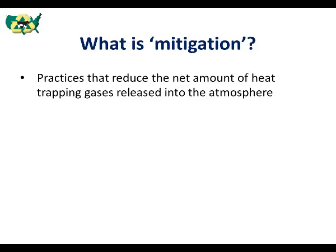Let's start out by defining what we mean by mitigation in the context of this lesson. Mitigation is defined as any practice that reduces the amount of heat trapping gases called greenhouse gases from being released into the atmosphere. Let's take a look at some examples from other industries. In the airline industry they talk about mitigation in terms of flying fewer miles by improving flight schedules or improving the fuel efficiency of airplanes.